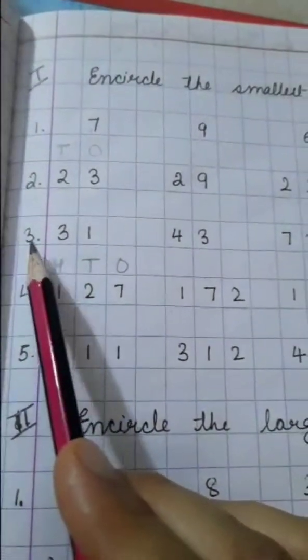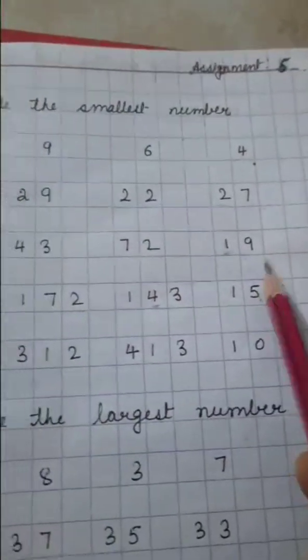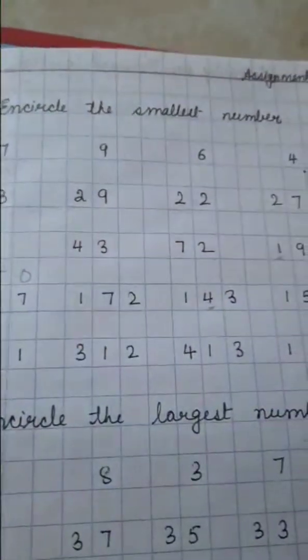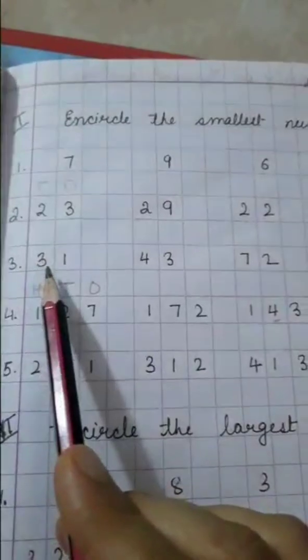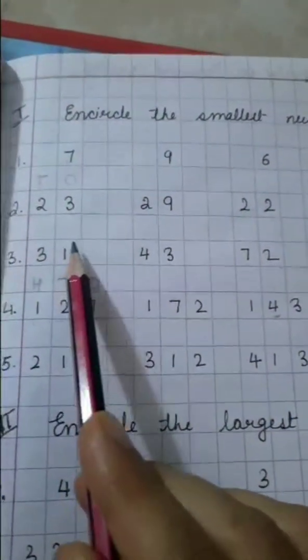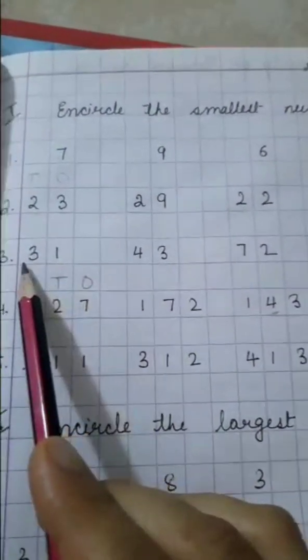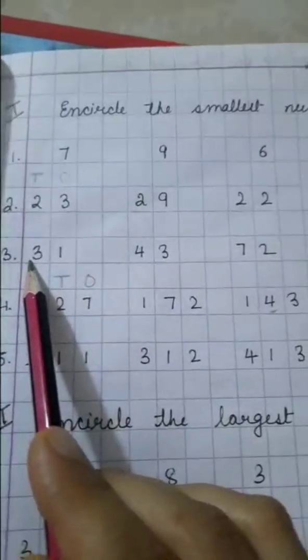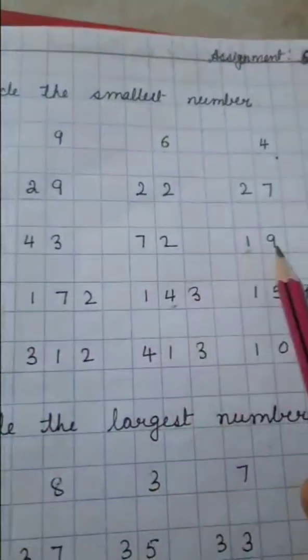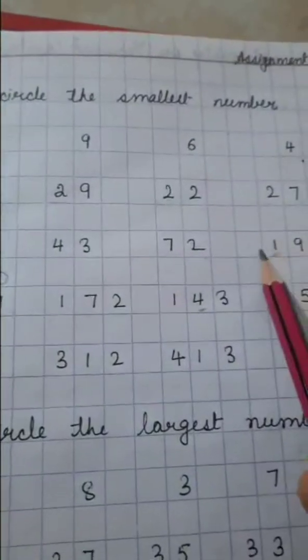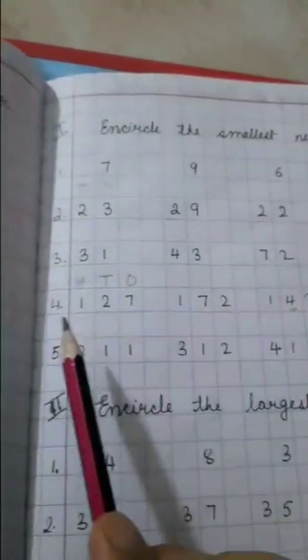Come to next group. 31, 43, 72, 19. Now over here, all the numbers are different. So you will not say, okay, here is the smallest number. No, you have to see 10s digit. 10s me 3 hai, 4 hai, 7 hai, 1 hai. So 1, 9, 19 is the smallest number.